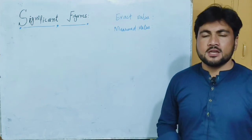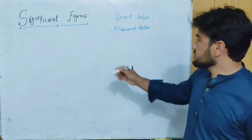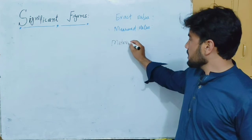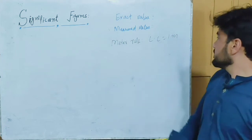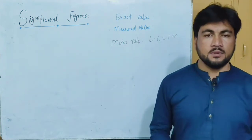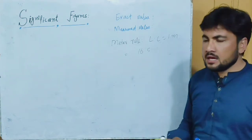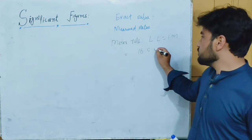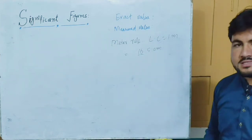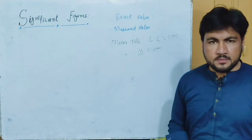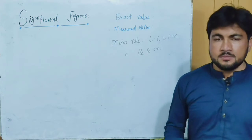Different readings can differ, and we call this a doubtful reading. For example, take a meter rule. The least count of a meter rule is one millimeter. If one student uses the meter rule to measure the length of a book and gets a reading of 16.5 cm, the last digit — the 5 in the millimeter place — carries some uncertainty about whether it is accurate.